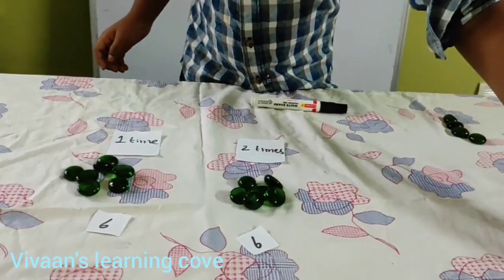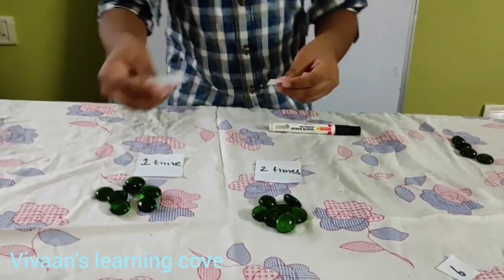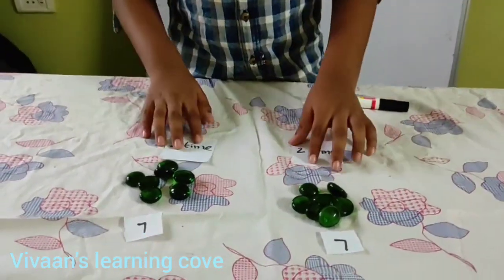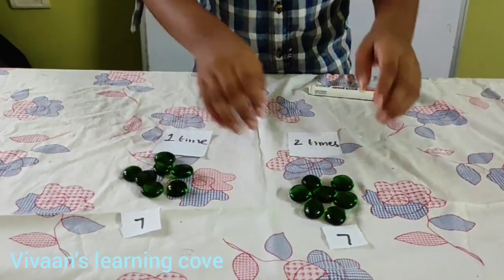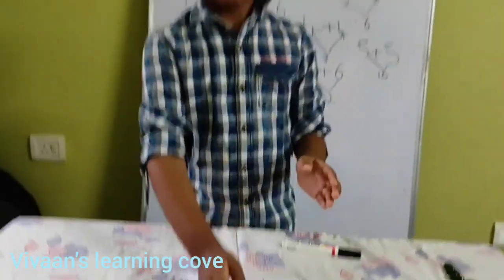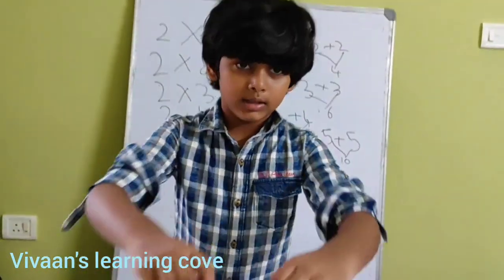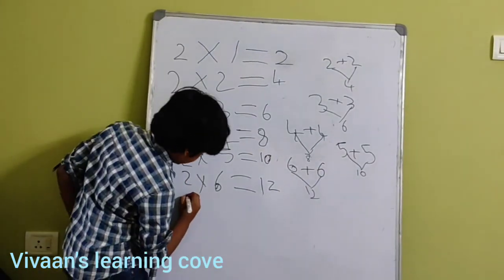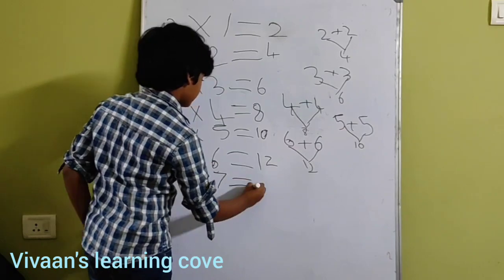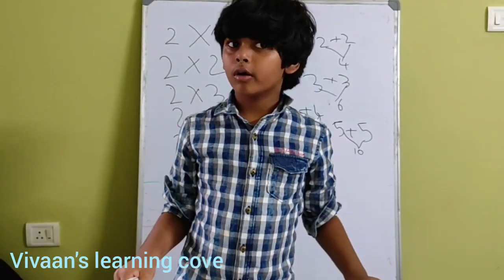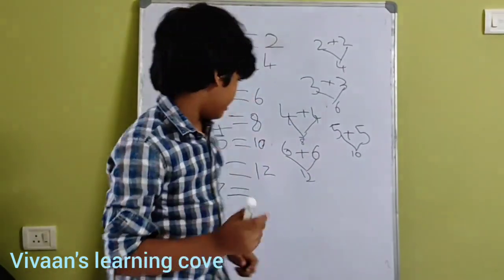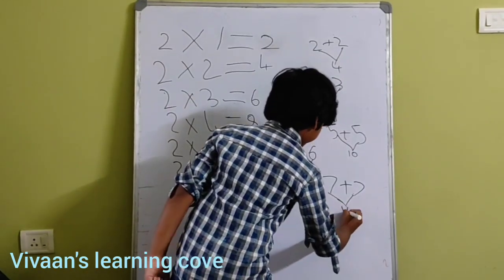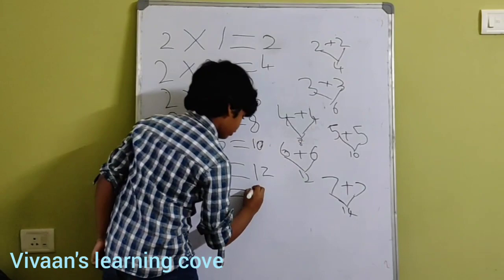Now I am going to take 7 pebbles and put these cards under them to represent that I am taking 7 one time and 2 times. Let us count: 7 here, 7 here — so 8, 9, 10, 11, 12, 13, 14. There are 14 pebbles. These cards mean 2 times 7. In multiplication we write: 2 times 7 equal to 14. We should write it as 7 plus 7 equal to 14.